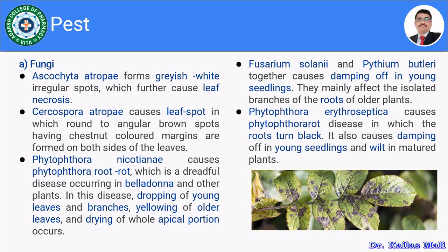There may be a change in the color of leaves and the whole plant may drop. Phytophthora erythroseptica causes phytophthora rot disease in which the root turns black, and it also causes damping of young seedlings and wilt in the matured plant. So the fungi responsible for infection of medicinal plants include Ascocyta atrophy, Circospora atrophy, Phytophthora nicotianae, Phytophthora butlerii, and Phytophthora erythroseptica.